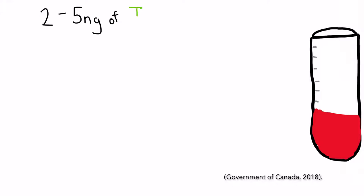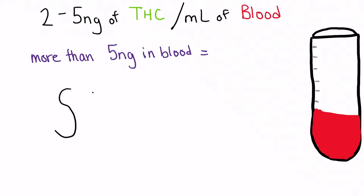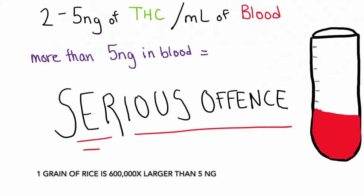The two prohibitory levels of THC are 2 nanograms to 5 nanograms of THC per milliliter in the blood, which is the lesser offense, and greater than 5 nanograms of THC per milliliter in the blood is considered a serious offense. A grain of rice is 600,000 times larger than that amount.